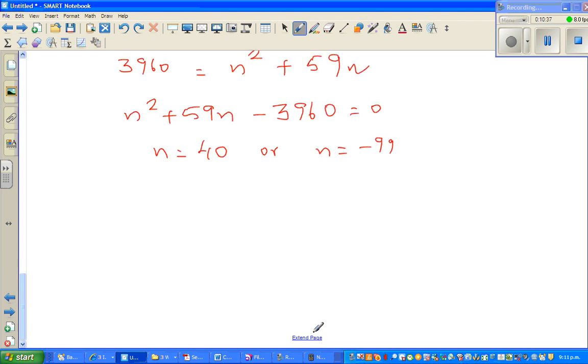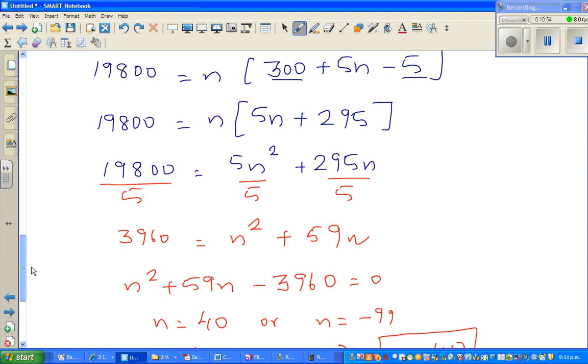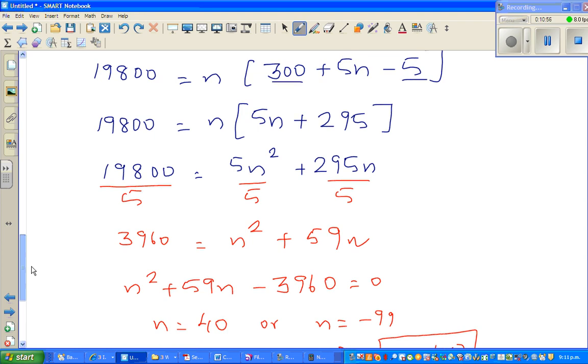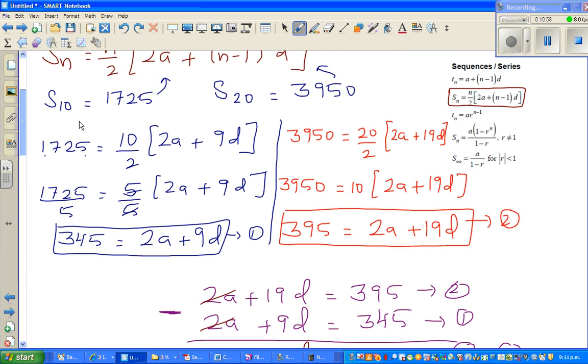Number of weeks cannot be negative, but you can write n should be greater than 0, which implies n is 40. So after 40 weeks you will have 9900 kg lifted.